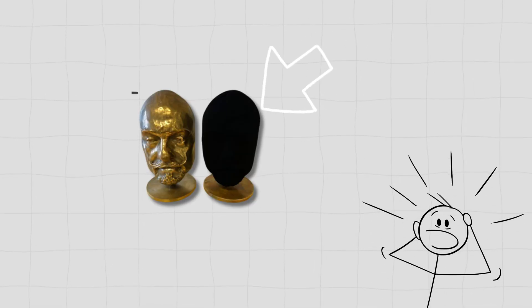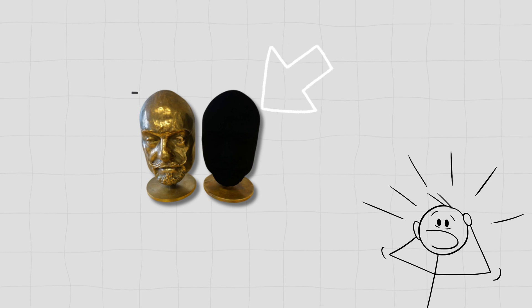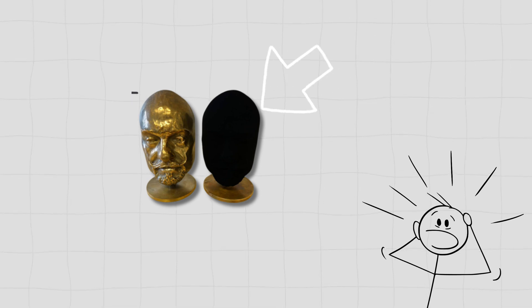To the human eye, Vantablack looks like a flat, featureless void. It's almost impossible to discern depth or shape when looking at a Vantablack-coated object.